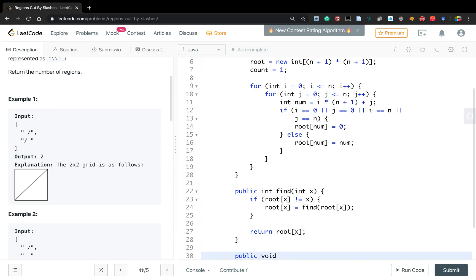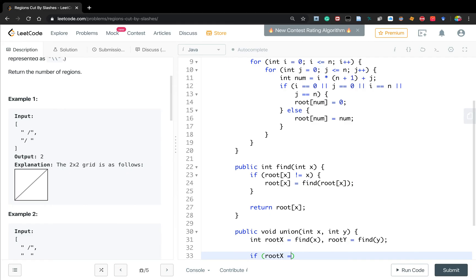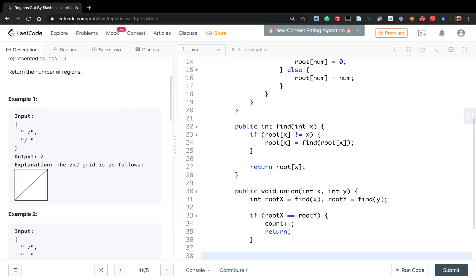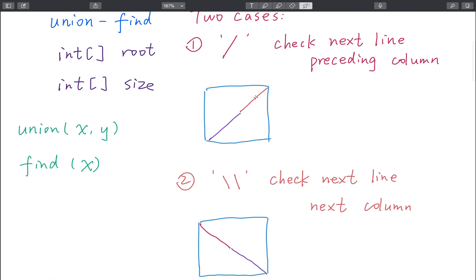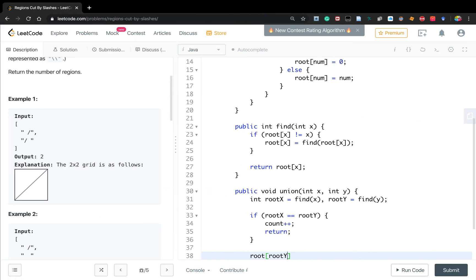This is the union. For int x, int y, we first find the root x and root y equal to find y. If root x equal to root y, they are connected. It is continuous, so the count should increment by one and we just return. Otherwise, we need to union it. And you'll see it has order. Like if it's x, this will be y. If it's x, this is y. So we change the root of y to the root of x.